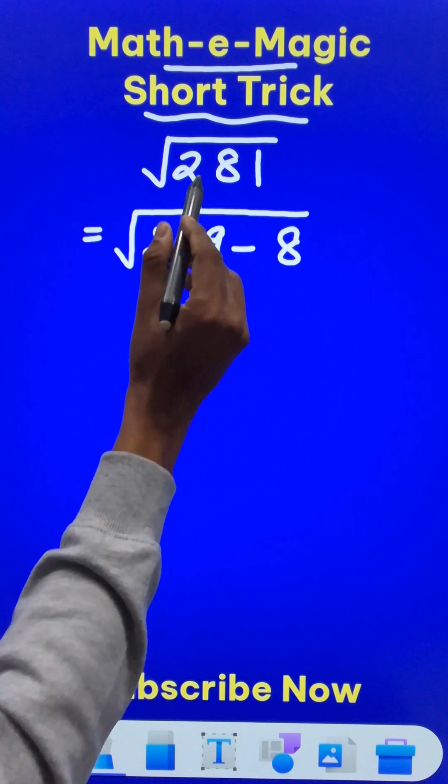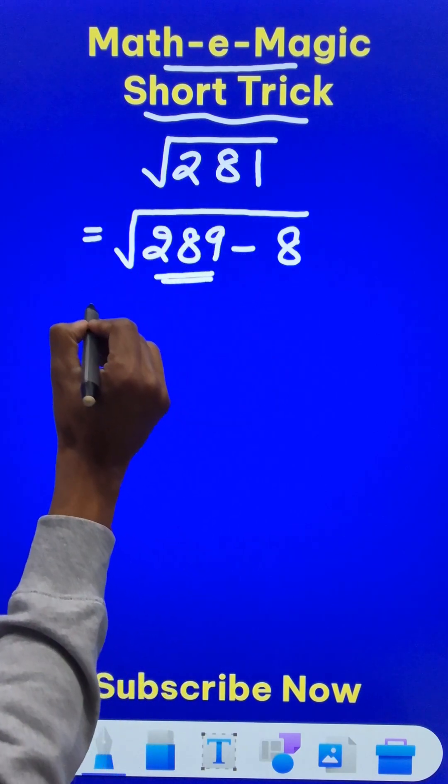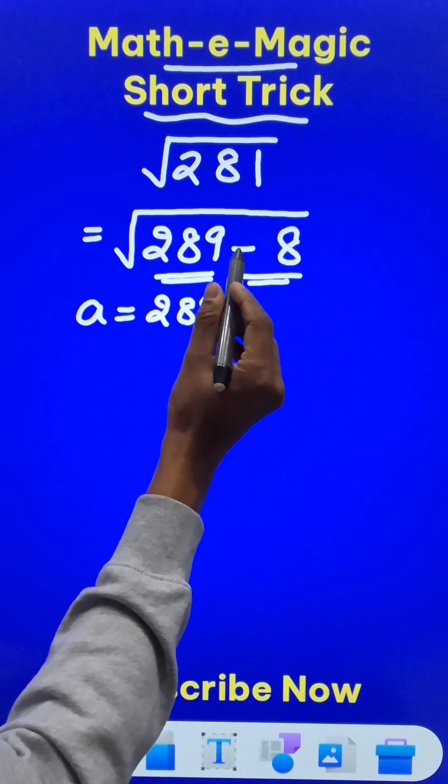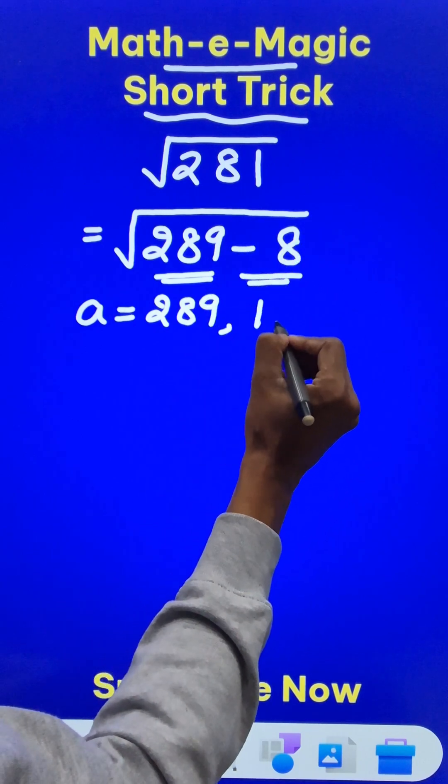Now the number here becomes the value of a, which is 289, and the number here with the sign, that is minus 8, becomes the value of b.